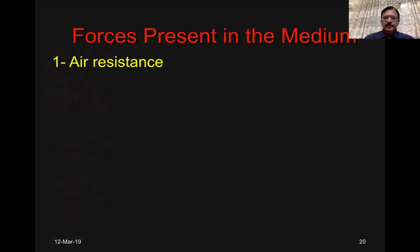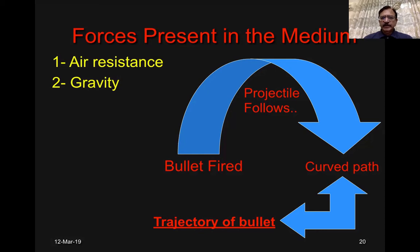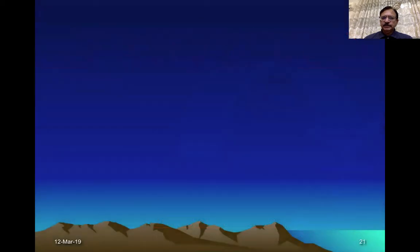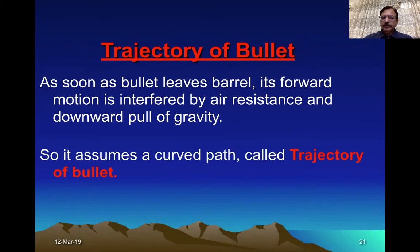The forces present in the medium are negative forces: air resistance and gravity. When the bullet is fired, it does not follow a straight line but assumes a curved pathway. The air resistance will try to reduce the speed and alter the direction; similarly, gravity will pull the bullet or pellet downward. So bullets and pellets will not keep traveling in a straight line — by the pull of gravity they will be pulled down, and a curved pathway will be made. This curved pathway which the bullet assumes is called the trajectory of the bullet.